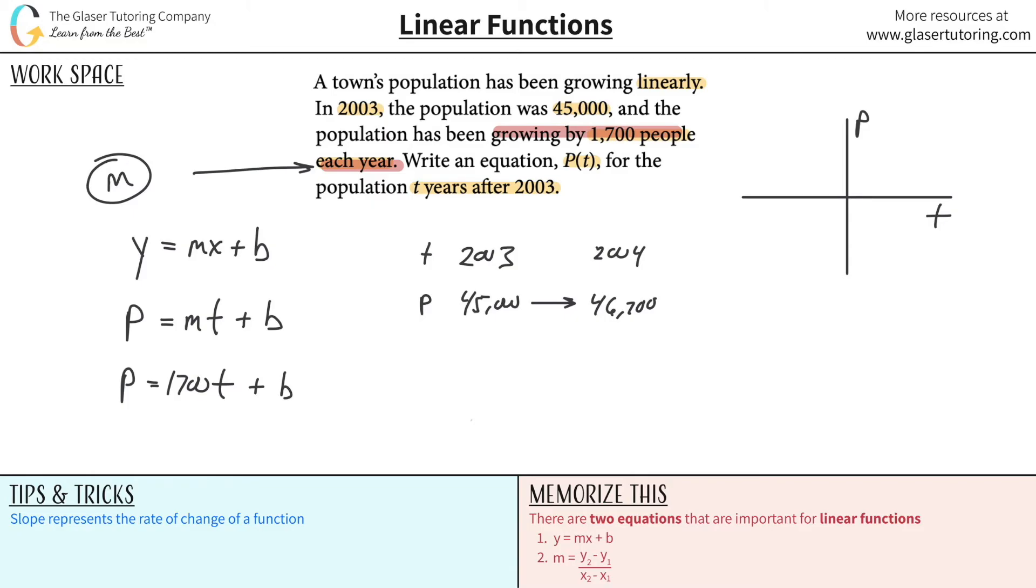We have the slope. Now the next thing is to figure out what's the y-intercept. We can think of the y-intercept as the initial value. We're starting this equation at 2003, so what's the population at 2003? 45,000. So that's the b value.